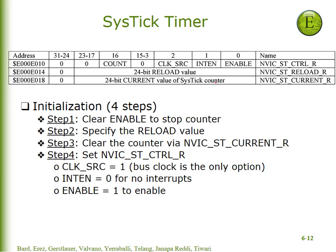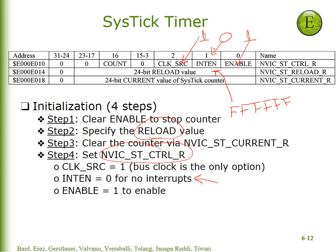So these are the registers. The initialization is pretty simple. Basically we're going to store into this reload value that six-F constant. We're going to set this bit so that it counts with the bus clock. We're going to set the enable bit so that it runs. In later labs we'll turn on the interrupts, but in this particular lab we're going to set this interrupt enable bit to 0.